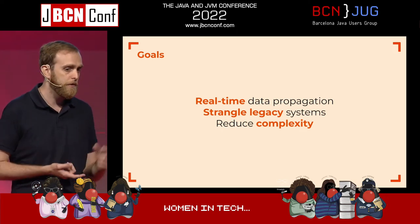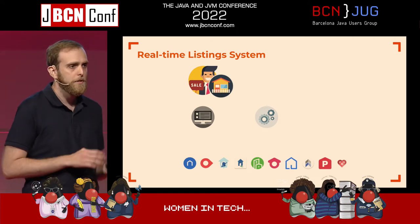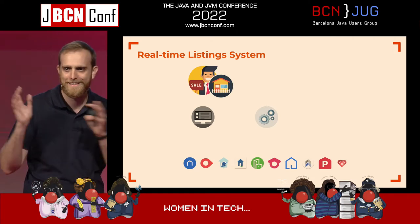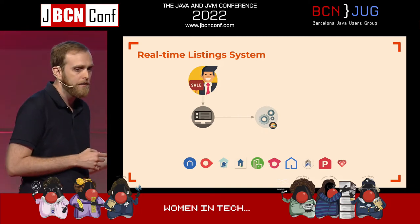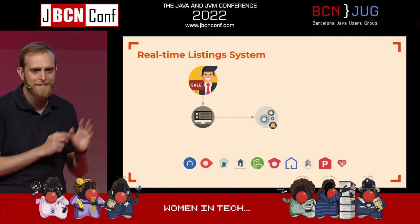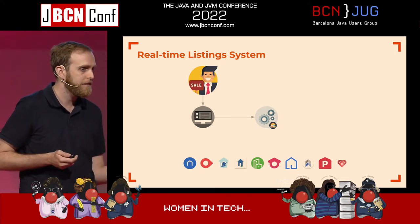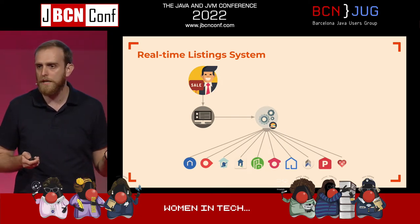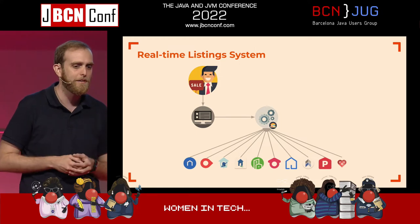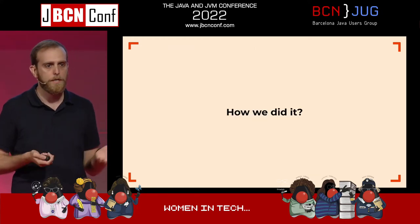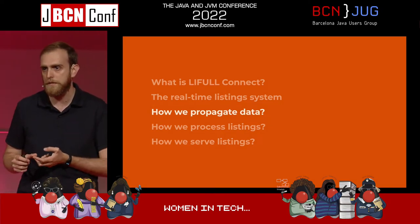The goals of this system are: to bring real-time data propagation, to strangle these legacy systems, and to reduce the complexity of the whole system. In a super simple diagram: a person publishes the listing, the listing gets propagated somewhere centrally, and then all the sites get the listings from this centralized place. I'm going to tell you how we did it in three steps: how we propagate the data, how we process the listings, and how we serve them.